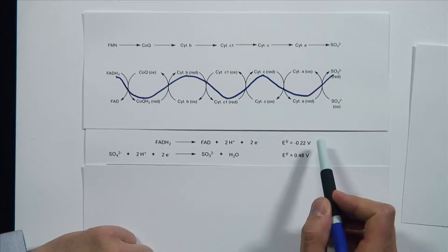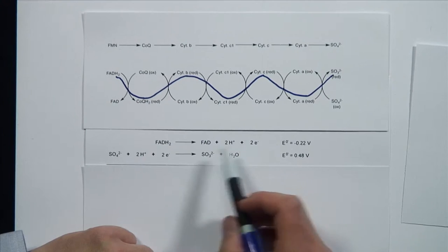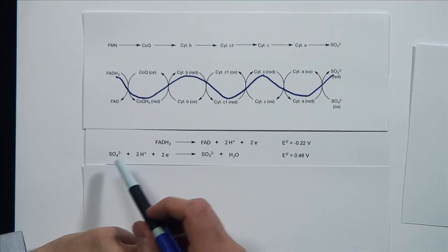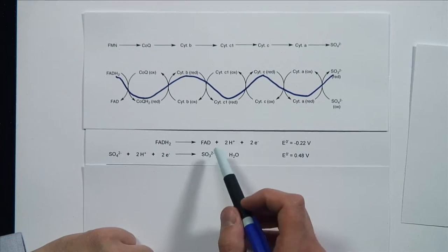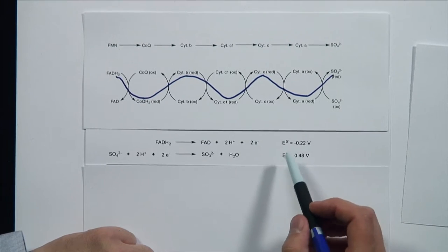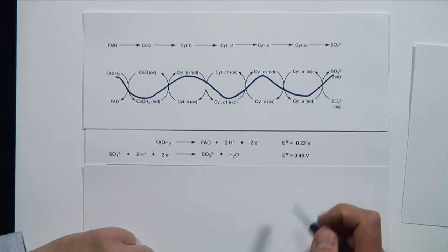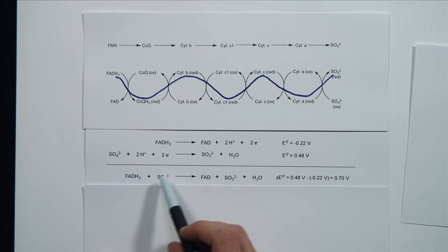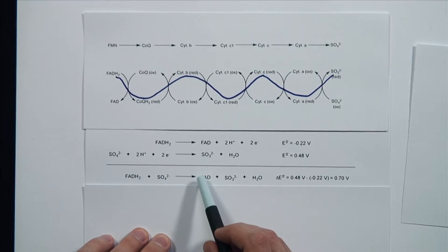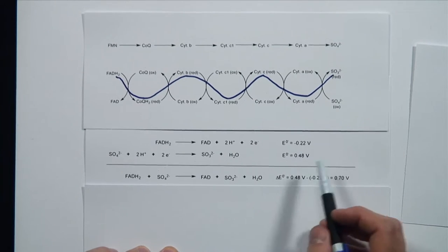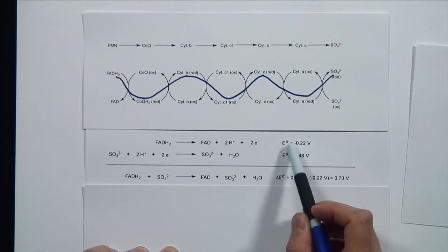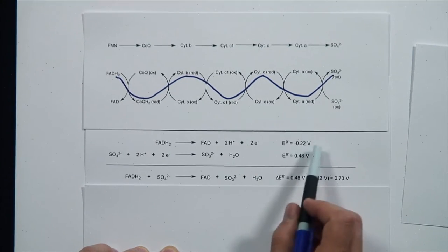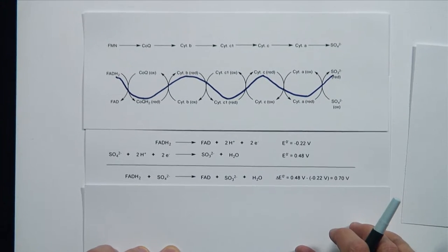Here are the two half reactions of this redox process. FADH2 gets oxidized to FAD and donates its two electrons; the E0 prime is minus 0.22 volts. Note this is a reduction potential from the table, but the equation as written is an oxidation, so the potential we take into account is the negative of this value. Sulfate then accepts the two electrons and gets reduced to sulfite and water; the electrochemical potential for this is 0.48 volts. When we add these two half reactions together, we get the overall process where FADH2 is oxidized by sulfate to generate FAD and sulfite. The electromotive force is the mathematical sum of these two, keeping in mind the sign convention for oxidation, giving an electromotive force of 0.7 volts.